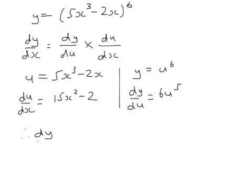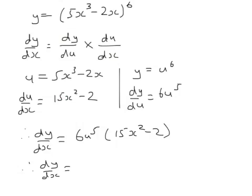So therefore, dy by dx is dy by du. I'm going back to this bit here. It's dy by du multiplied by du by dx. So that's 6u to the power 5 multiplied by 15x squared minus 2. Now, I introduced the u, so I can't leave it in terms of u. So the final bit is to write out dy by dx